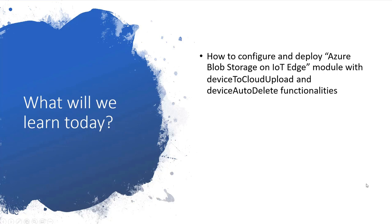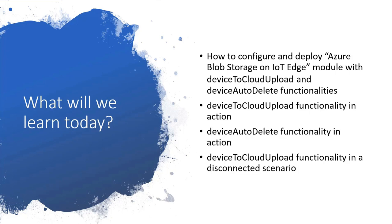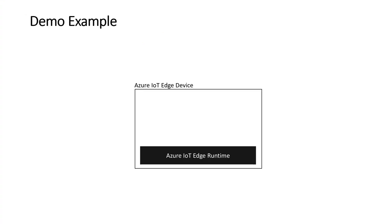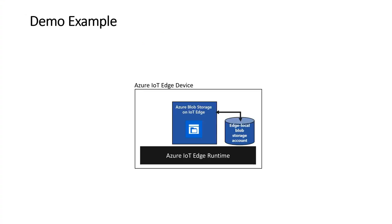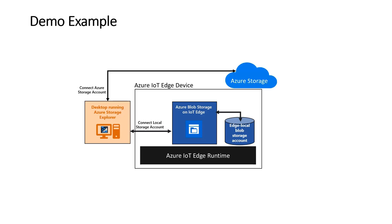What will we learn today? How to configure and deploy this module; device-to-cloud upload functionality in action; device auto-delete functionality in action; and device-to-cloud upload functionality in a disconnected scenario. We already have an Azure IoT Edge device running Azure IoT Edge runtime. We will deploy Azure Blob Storage on IoT Edge module, install Azure Storage Explorer, connect it to our local and Azure storage accounts, then upload data and check out device-to-cloud upload in action. Let's get started.